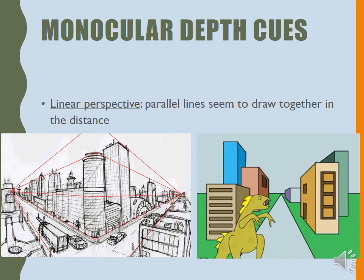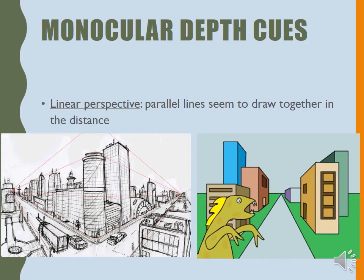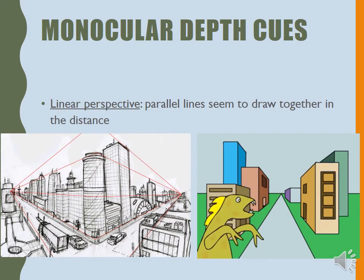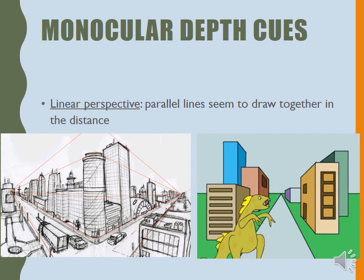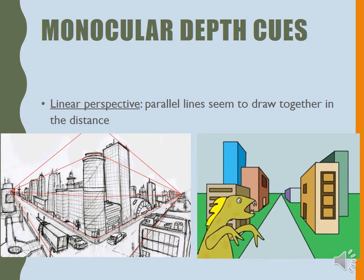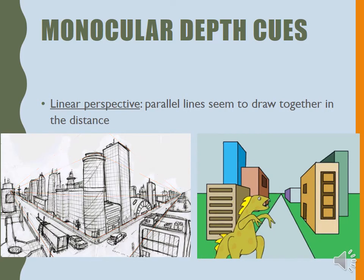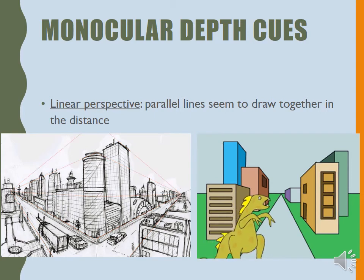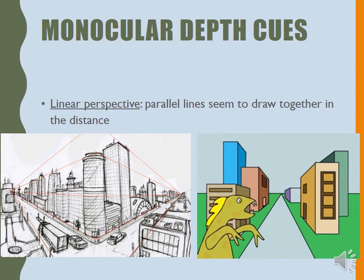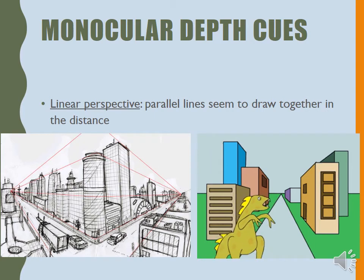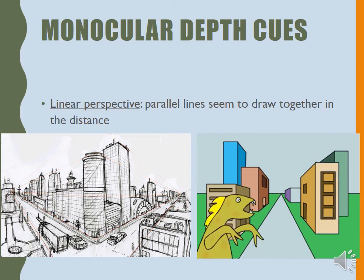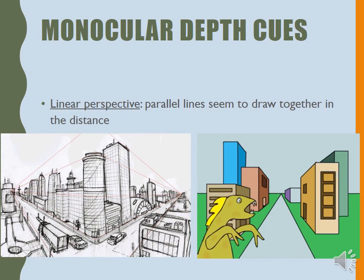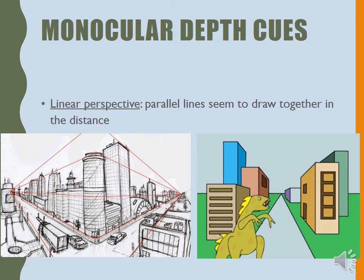Then we have linear perspective. All of you were taught at some point in middle school how to draw with perspective. This is the idea that parallel lines seem to come together in the distance — they seem to converge. Don't confuse this with the binocular cue of convergence. So if you're going to draw a winding stream going up into the mountains, the stream closest to you should be nice and wide, and as it gets further into the mountains, it should be moving up the page and getting narrower and narrower.